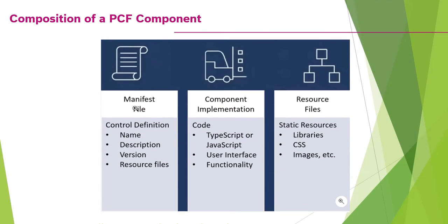To recap the composition of a PCF component: the manifest file contains the name, description, version, and references to available resource files. The component implementation is where you write the user interface, business logic, or functionality using TypeScript, JavaScript, or maybe ReactJS. And the resource files can include external CSS files or a custom CSS file that you add to your project or solution structure — all things you will see in the subsequent videos. These resource files can be static resources like libraries, CSS, and images.